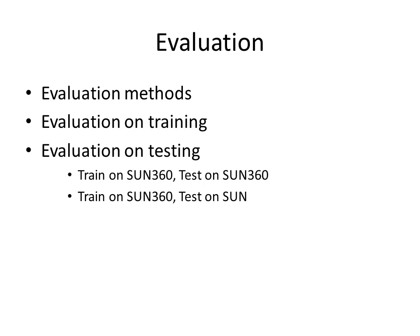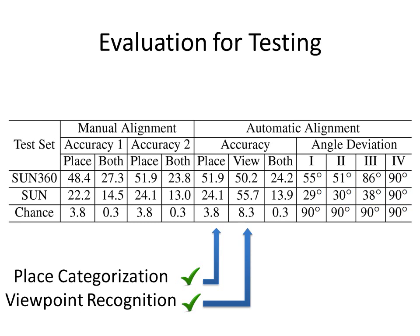Finally, we evaluate our algorithm on some test images. We use two testing sets: first, we exclude some panoramas from training and sample limited field of view images from these panoramas for testing. We also test the algorithm on real-world photos from the Sun database. This table shows the algorithm's performance on each test set. We evaluate place classification accuracy and viewpoint recognition accuracy separately, as well as the joint accuracy — where the classification is correct only if both the place category prediction and the viewpoint prediction are correct. We compare our algorithm against the model trained for manual panorama alignment, and the results are very close.